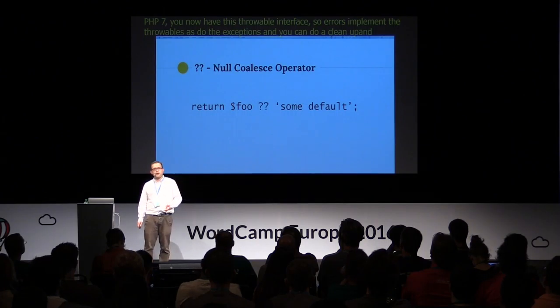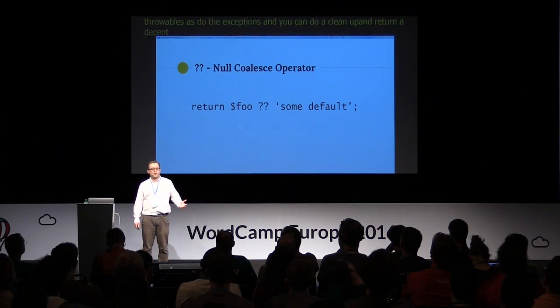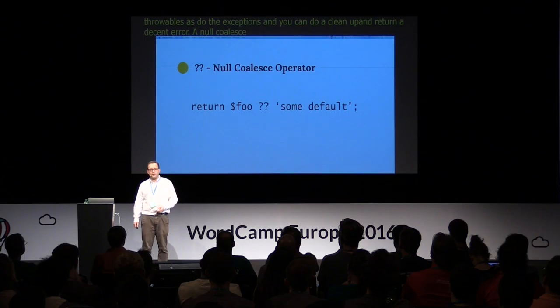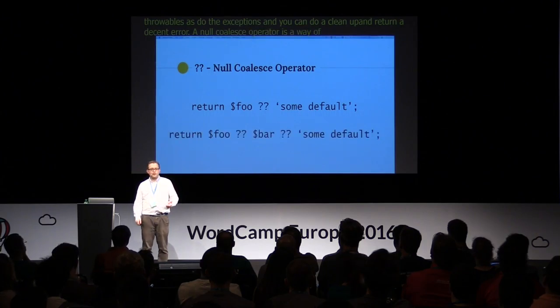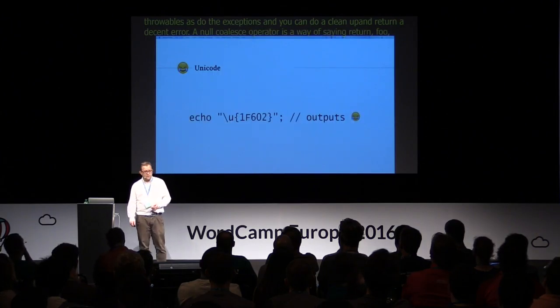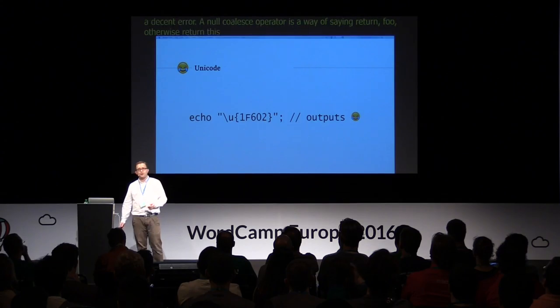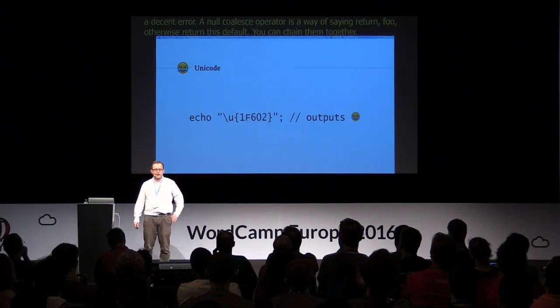The null coalescing operator is just a way of saying: if foo is set and has a value, return foo; otherwise, return this default. You can also chain them together. You can also output Unicode, which is obviously really useful.